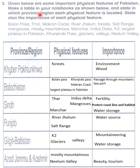Now we go to question three: given below are some important physical features of Pakistan. Make a table in your notebook and state in which province or region each physical feature is located, and also state the importance of each. The features include: Bolan Pass, Thar, Makran Coast, River Jhelum, forests, salt range, mangroves, mostly mountainous terrain,